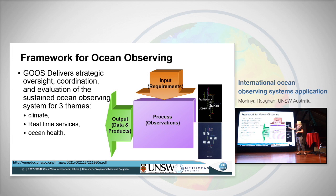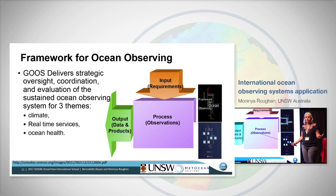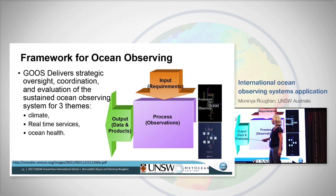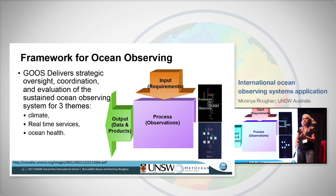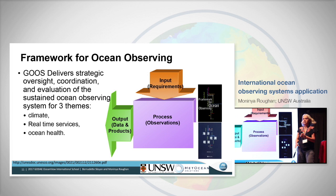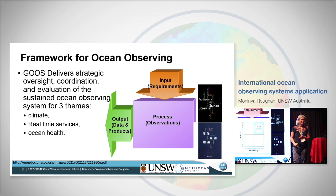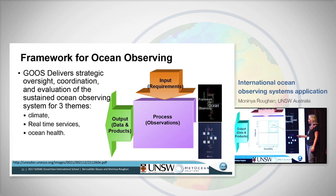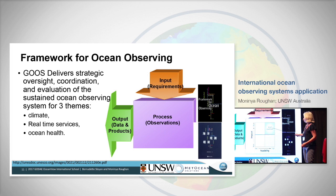How do we define essential ocean variables? We think about the impact and the feasibility of actually measuring those observations. We need to consider: is the impact low or high? Is the feasibility low or high? Ideally you sit in the sweet spot of high impact and high feasibility — that's where you target your investment. Temperature as measured by an Argo float is high impact and highly feasible, giving us what we need.